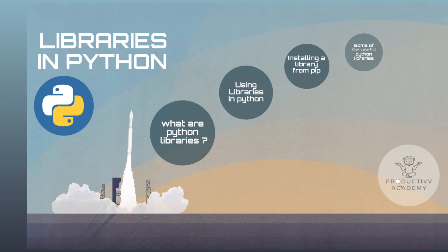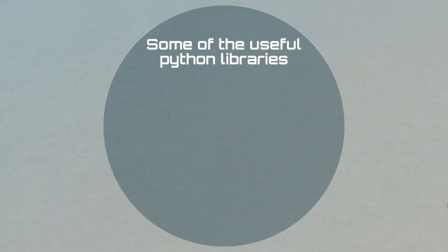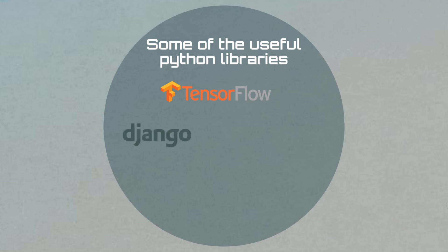Now let's look at some examples of important libraries. The first important library is TensorFlow. TensorFlow is a library developed for machine learning, artificial intelligence, deep learning and other tasks. You can use TensorFlow for these purposes.